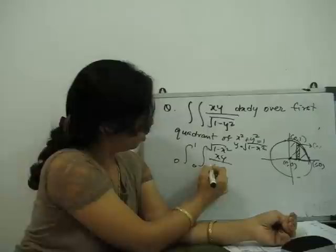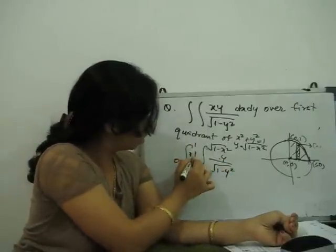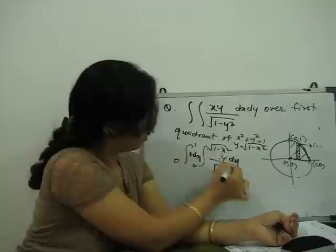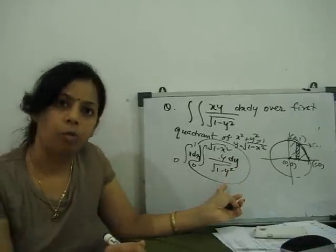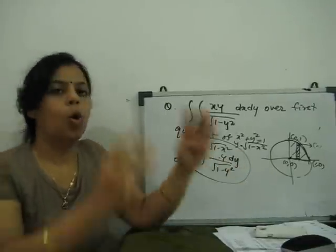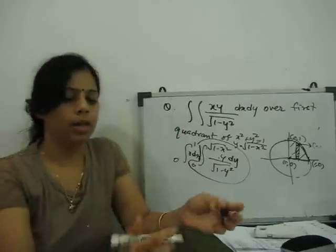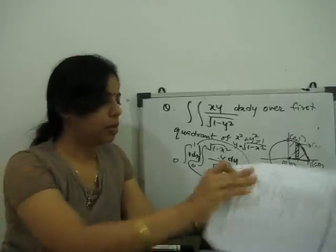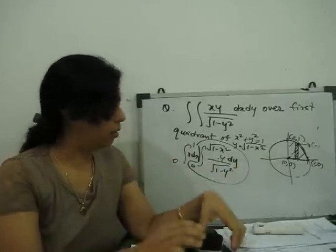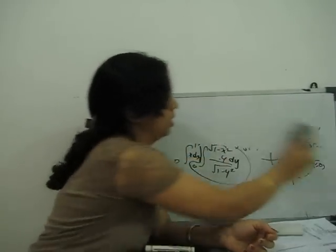So the upper limit of y is y upon 1 minus y square, then dx comes outside and dy. First we have to integrate this with respect to y, apply the limit, then the whole function integrate with respect to x and apply the limit 0 to 1. So that is a very simple example of how to find the limit for a given curve. Some more examples on this so you can easily understand. Then we go for change of order of integration.